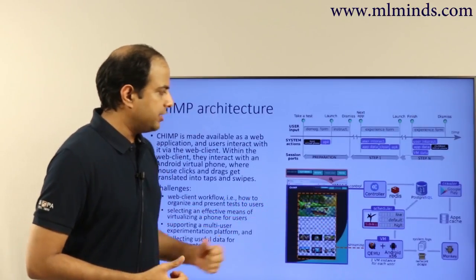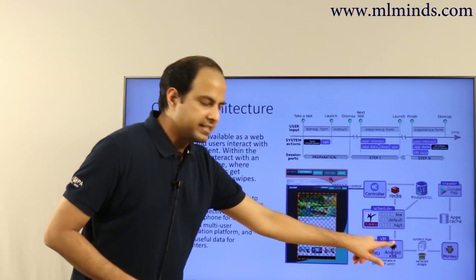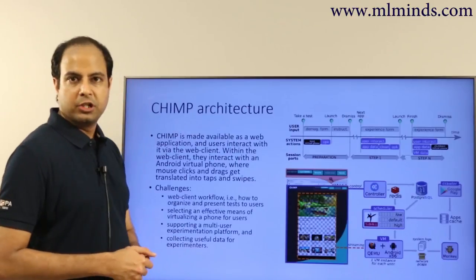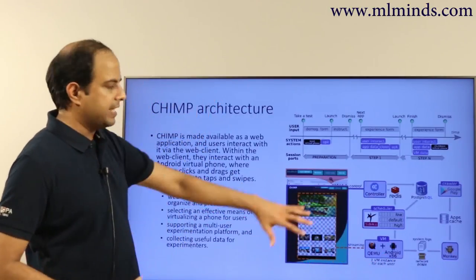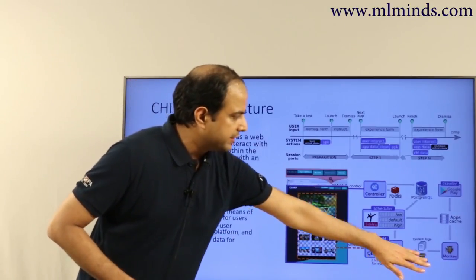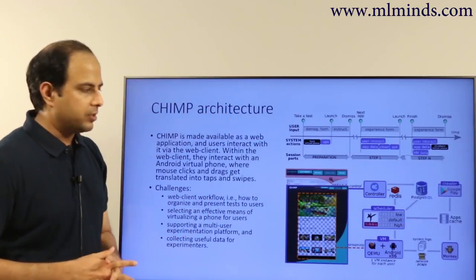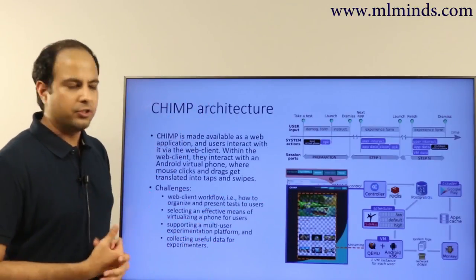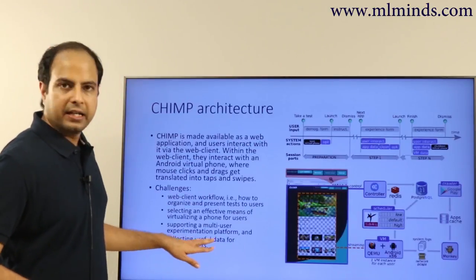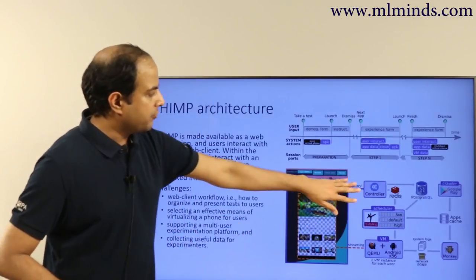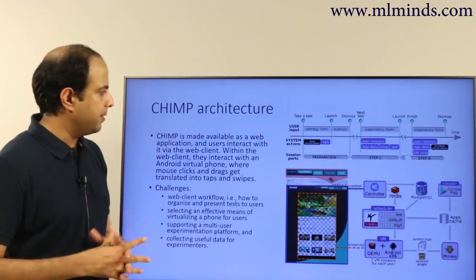The architecture diagram shows a virtual machine running an Android image. Part of the screen is shown to the user. At the back end, it's running Android x86, using KVM for virtualization. Streaming takes part of the virtual machine state and shows it to the user. System logs are written using simple monkey scripts. A crawler on Google Play is required to crawl new apps and make them available for testing. PostgreSQL stores all metadata and measurements. The controller controls the entire flow — which app is given for testing, how much time the user spends, and so on.